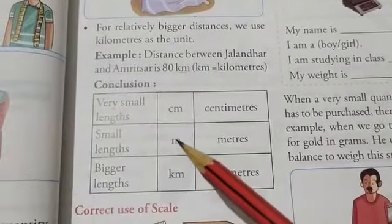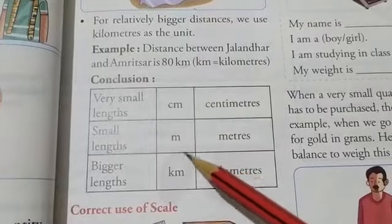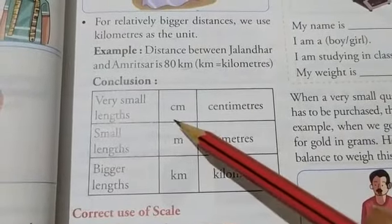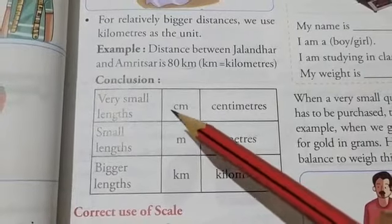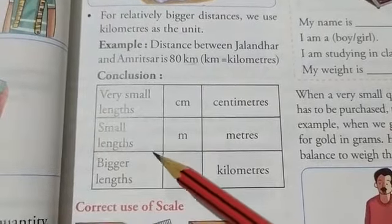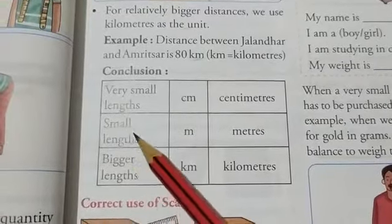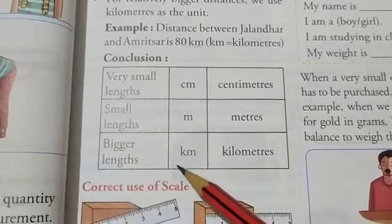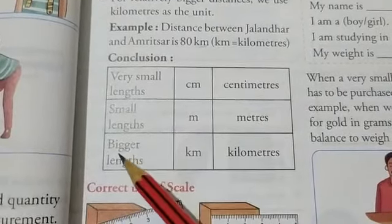So there are different units of length like centimeter, meter and kilometer. Centimeter is a small unit which is used to measure very small lengths. And meter is an intermediate one which is used to measure small lengths. And kilometer is used to measure the bigger lengths.